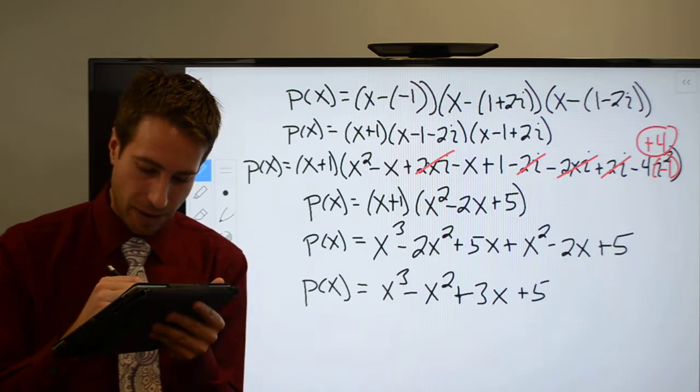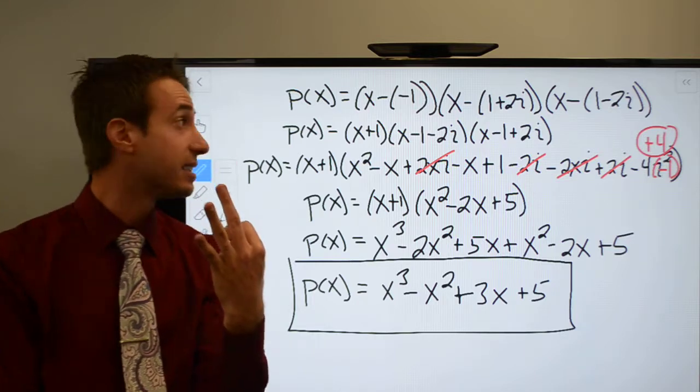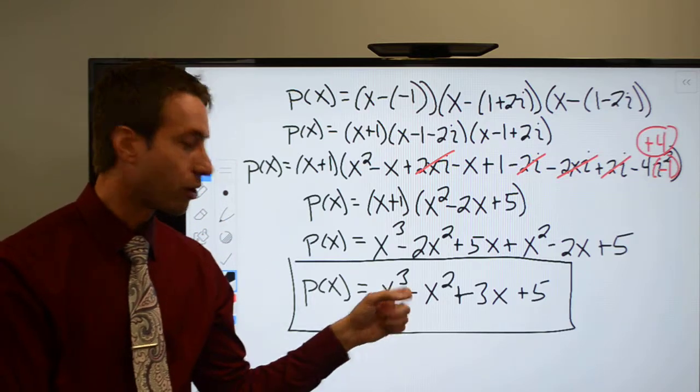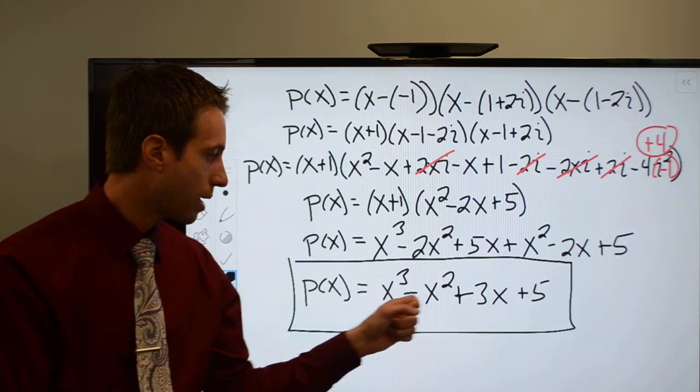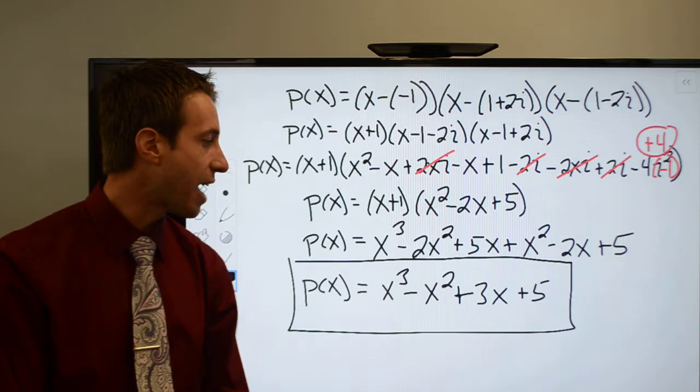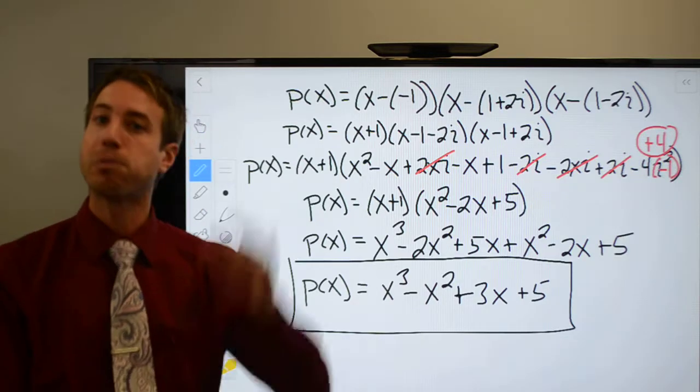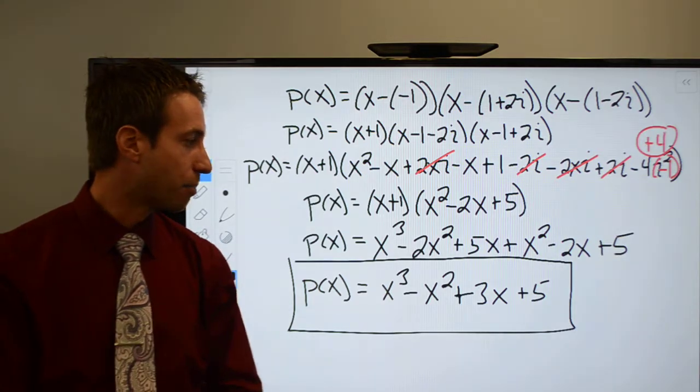That takes care of everybody. And run through it real quick. I had three zeros, and I have a polynomial that is third degree. So the fundamental theorem of algebra checks out. Negative 1, 3, and 5. All my coefficients are integers, so I'm good there. So this is the polynomial representing the three zeros that I gave you in the problem.